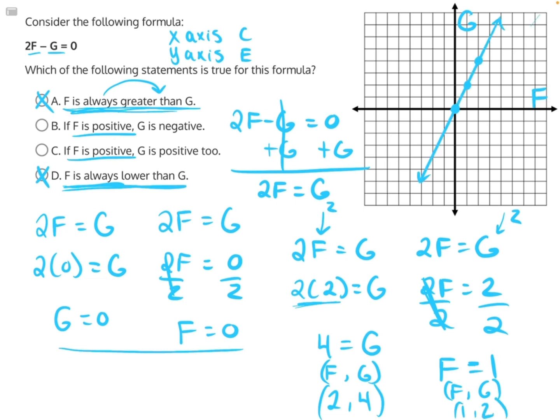Now I've plotted our three points. We have zero comma zero from trying to find our intercepts earlier, then we have two comma four, where I went to the right two and up four, then we have one comma two, to the right one, up two.